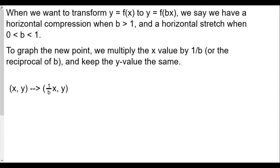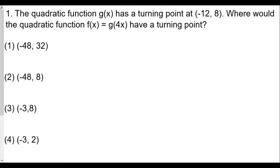So x comma y becomes one over b comma y. Unlike vertical stretching or compressions where we multiply the y value, for a horizontal dilation if b is greater than one it's a compression. To get the transformed value, whether compression or stretch, we take the reciprocal of b — that is, one divided by b — and multiply the x value, keeping the y value the same.